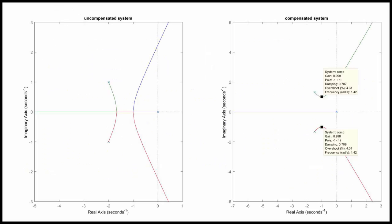Now let's go visit MATLAB. Here we have the root locus, and what we see is that originally the shape was a little different and it was not possible to get to the poles at negative 1 plus j and negative 1 minus j, because they would have been somewhere around here. After compensation, the shape changes and now with a gain of 1 we have negative 1 plus j and negative 1 minus j, and also the fourth pole corresponding to the negative 1 term.